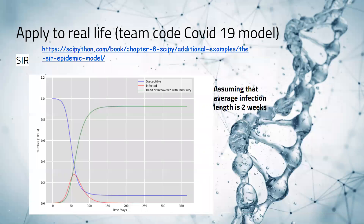I will now be passing it on to Vivek, who will explain the real-life applications of this model. In this graph, here's a Python coding package we found for the spreading of the coronavirus, and we took the code and made a few modifications to model it. For example, we made the average length of infection two weeks and increased its infectivity.